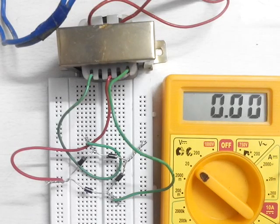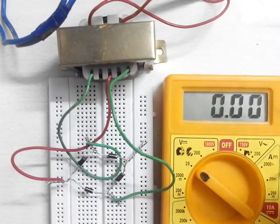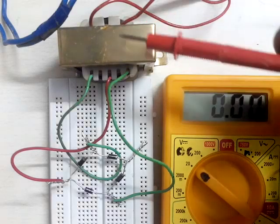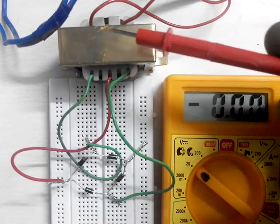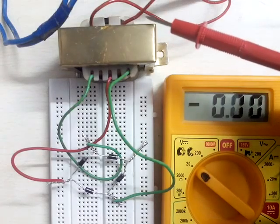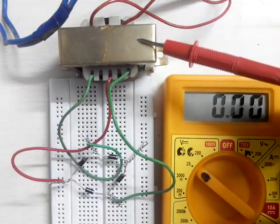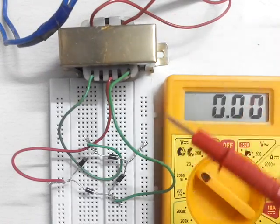Now we will construct a 5 volt regulated power supply from 230 volt AC. This is basically a step-down transformer which is connected to 230 volt AC. The primary of this transformer is connected to the 230 volt AC.